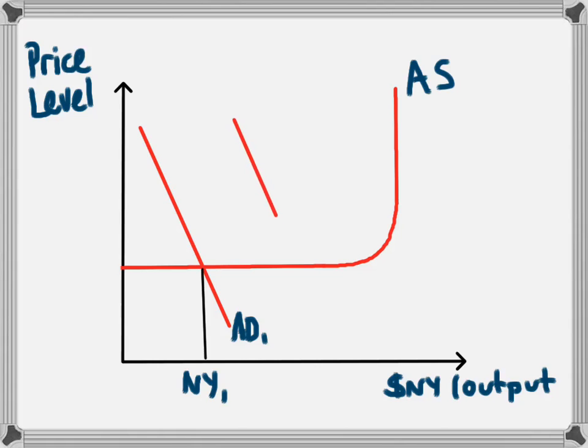An increase in aggregate demand in this section of the curve will lead to an increase in national income. So AD1 increases to AD2. This could be because of any of the elements of aggregate demand increasing. So a reminder that aggregate demand is C plus I plus G plus X minus M.